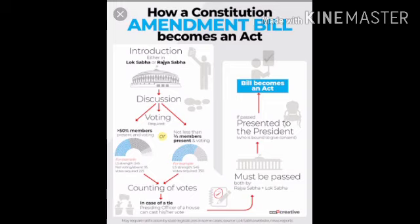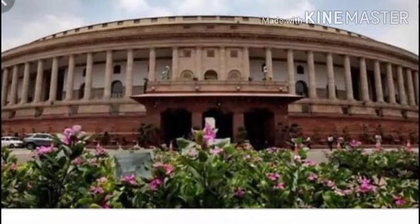Let us know how a constitutional amendment becomes an act. First, a bill must be brought in the parliament and discussion takes place on it. The bill can be introduced in either house. After discussion, voting and counting of votes occurs. If it passes both houses, it is presented to the president, and after his consent it gets passed.